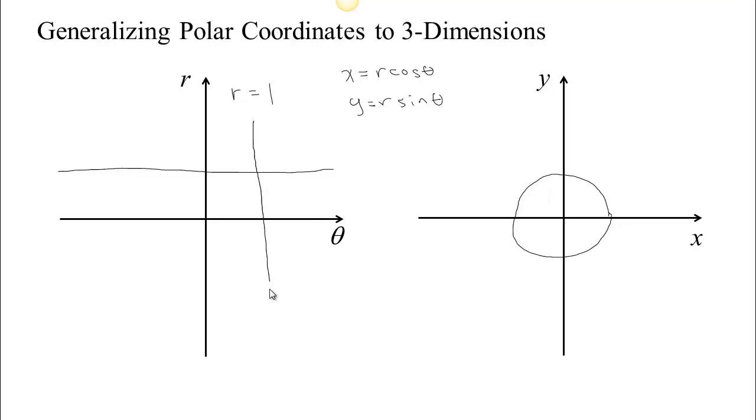It also turns lines of constant theta. So if theta is fixed then what you get is you're always facing the same direction no matter what r is. So you get a line through the origin. So polar coordinates are a transformation that take lines of constant r and bends them into circles. It takes lines of constant theta and makes them into lines through the origin at that particular angle theta.